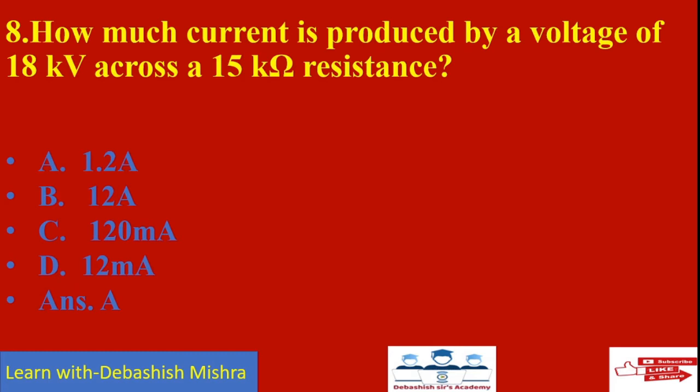How much current is produced by a voltage of 18 kilovolts across a 15 kilohm resistance? We need to calculate the current. We know V = IR, so I = V/R. Therefore I = 18 kilovolts divided by 15 kilohms equals 1.2 amperes. So answer A is the correct answer.